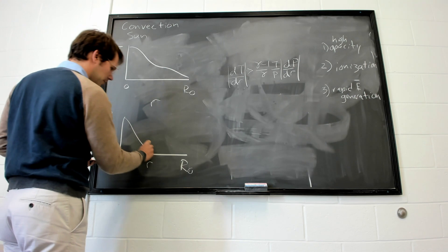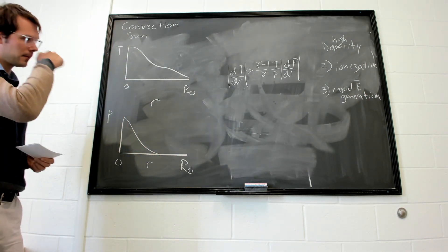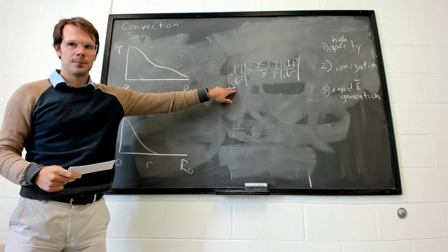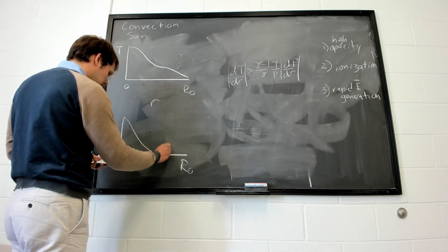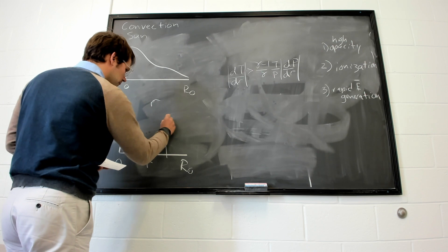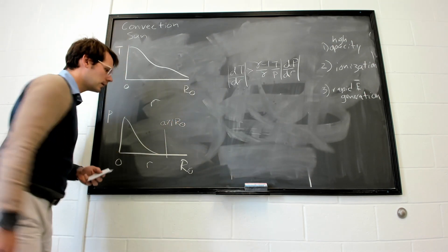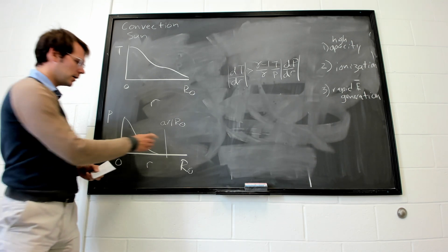And then we can go and calculate this quantity using these profiles. And then we find that around 0.71 r sun is when this criterion is exceeded.